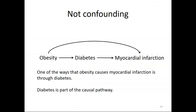Not everything that fits a confounding diagram is actually a confounder. If we look at obesity and myocardial infarction, we know obesity causes diabetes and diabetes causes MI — so diabetes is part of the causal pathway, not a confounder. Adjusting for diabetes changes your estimate by 15% or more, but that's because it's on the causal pathway. You might want to adjust for it to quantify mediation, but it's not the same thing as confounding.